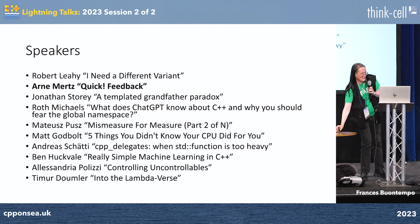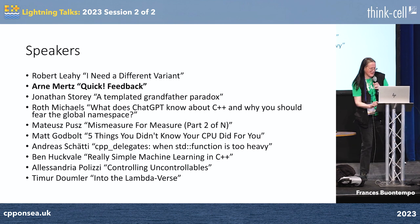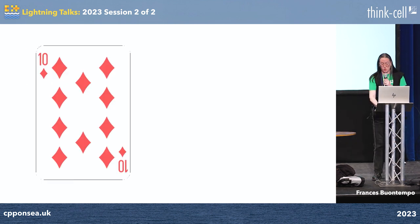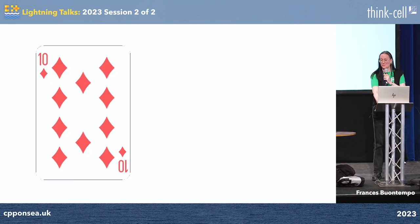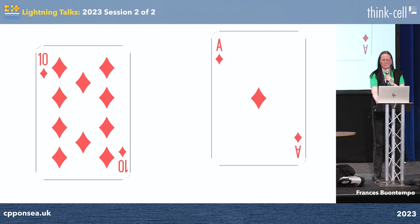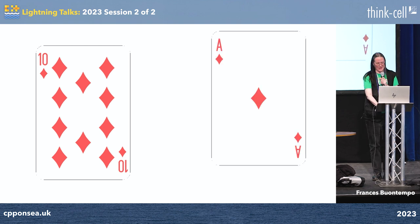Arne is heading this way quickly. Higher, lower. Ace is high.